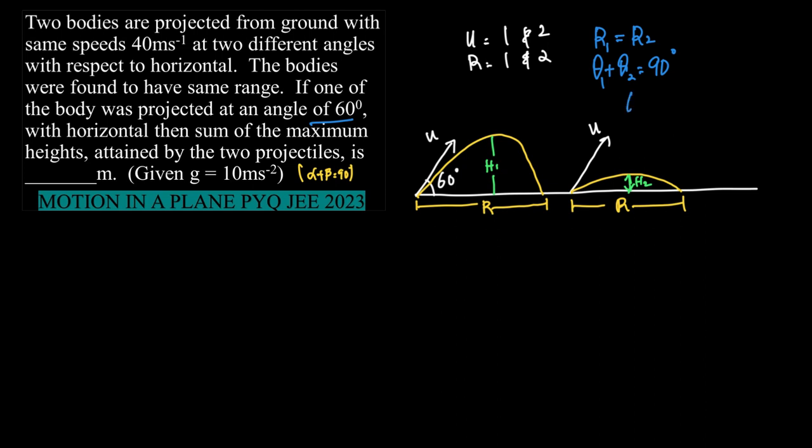so 60 degree plus theta 2 is equal to 90 degree, which means theta 2 is actually 90 minus 60 degrees, right? So we have two objects projected at u common velocity, one is projected at 60 degree and the other is projected at 30 degree.